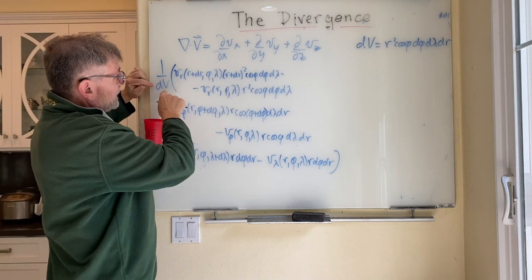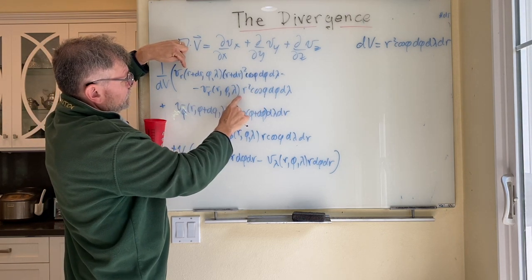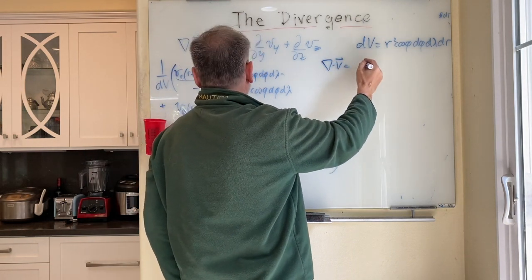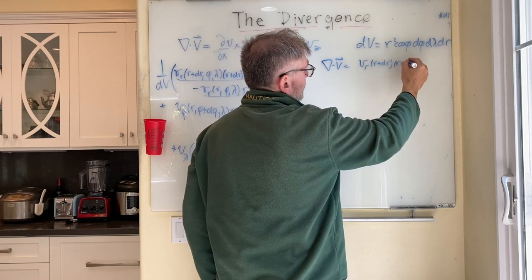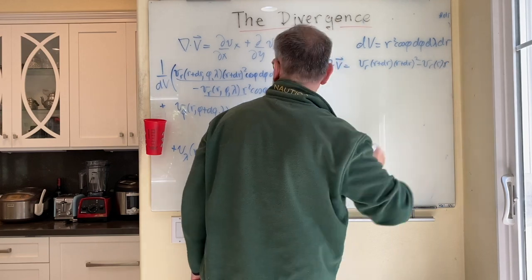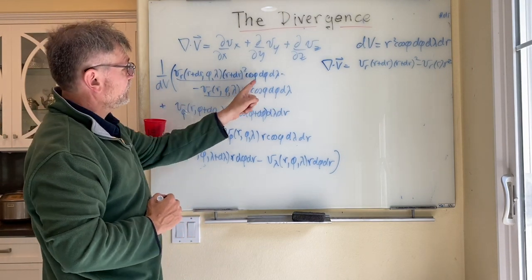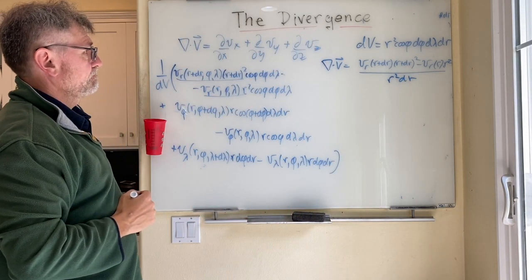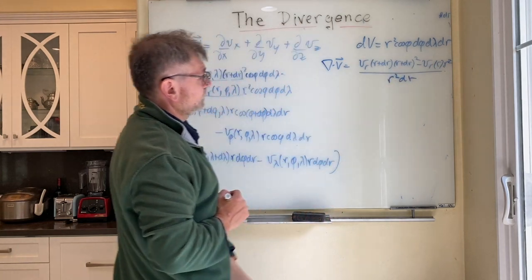For the first term, when I divide by dv, the cos phi, d phi, and d lambda all cancel. So I'm left with: vr at (r + dr) times (r + dr) squared, minus vr at r times r squared, all divided by r squared dr. I kept r squared in both terms since one has (r + dr) squared and I couldn't simply cancel. That's the first term of the divergence.